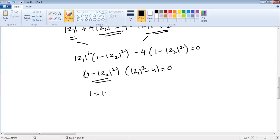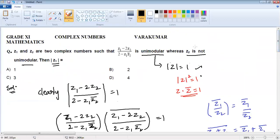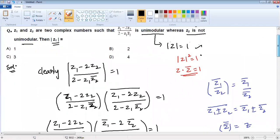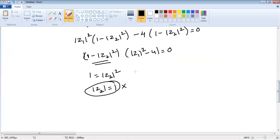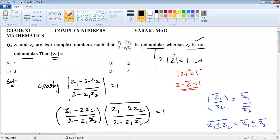(1 minus modulus Z2 squared) cannot be zero because it's said Z2 is not unimodular, so it is not possible. Then obviously modulus Z1 squared minus 4 equals 0. If you take modulus Z1 squared equals 4, from here modulus Z1 equals plus 2. So if you move to option B, which is 2, that is the right answer.